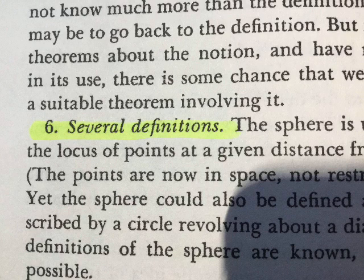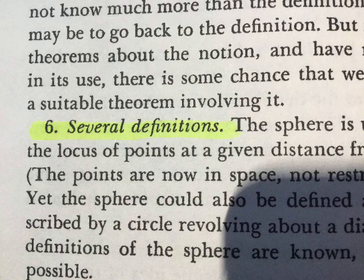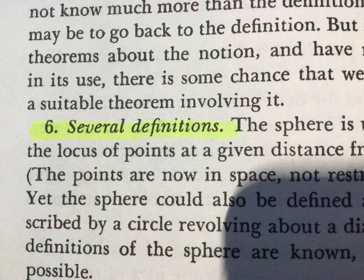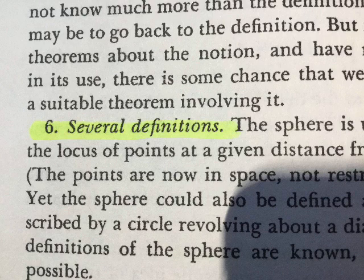He inscribes in the circle a regular polygon with an even number of sides, of which the fixed diameter joins opposite vertices. The regular polygon approximates the circle and, revolving with the circle, generates a convex surface composed of two cones with vertices at the extremities of the fixed diameter, and several frustums of cones in between.